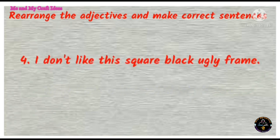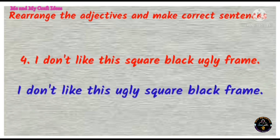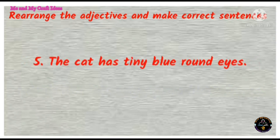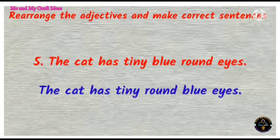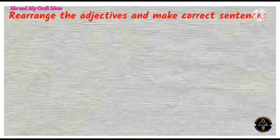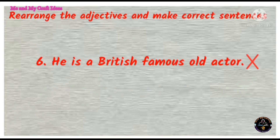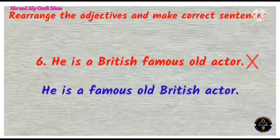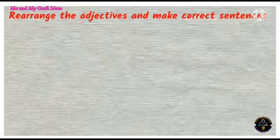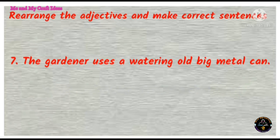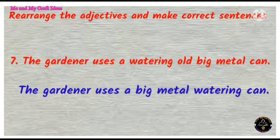I don't like this square black ugly frame. Correct: I don't like this ugly square black frame. The cat has tiny blue round eyes. Correct: the cat has tiny round blue eyes. He is a British famous old actor. Correct: he is a famous old British actor. The gardener uses a watering old big metal can. Correct: the gardener uses a big metal watering can.